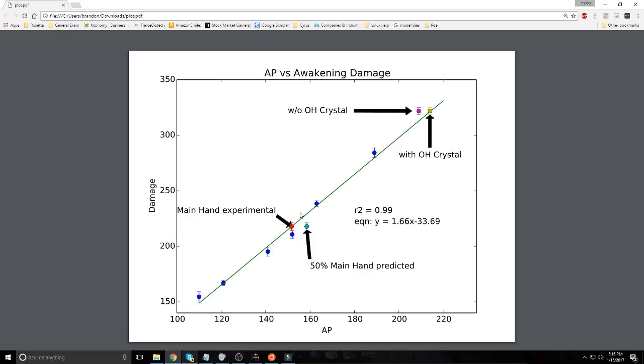However, one thing that's interesting is I have two points highlighted on the graph. This is the amount of damage that I got with the main hand with the experiment. It came out to about 217. And this is what we would predict with the awakening, if it was in fact contributing 50% damage. So that would be an extra, if we look at the difference between the Elsh Sword and the Kazarka, we're looking at about...